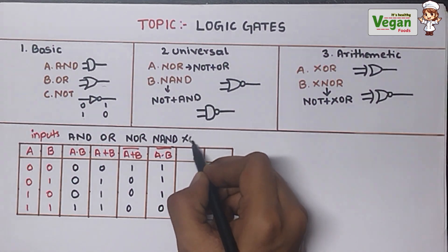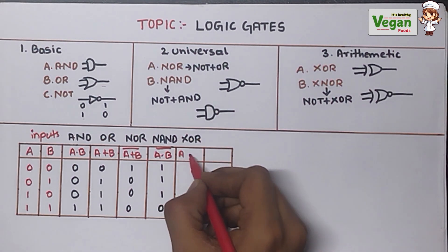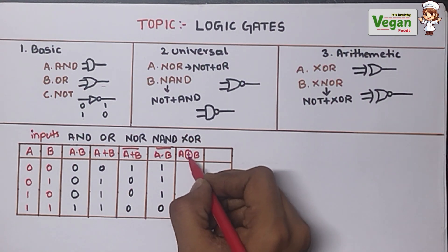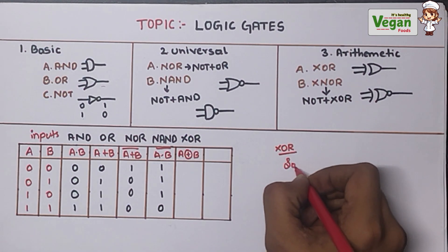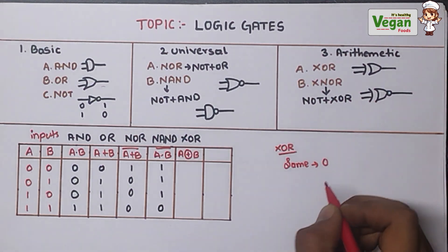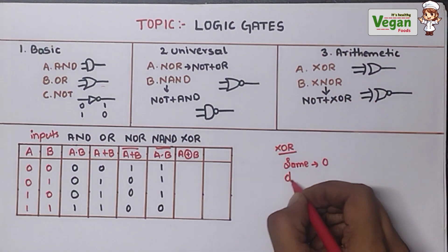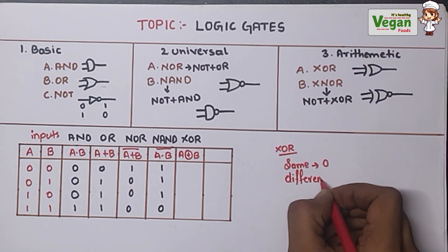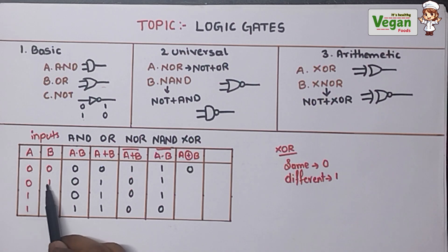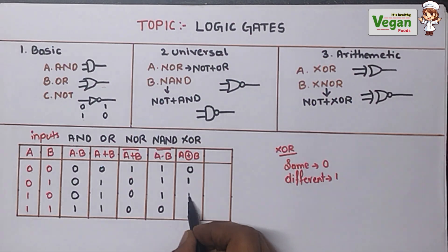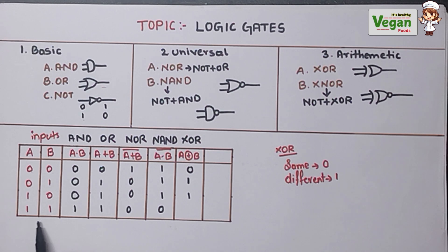Next is the XOR gate. The formula for XOR gate is A XOR B, represented as a plus inside a circle. The short trick for XOR gate is: if both inputs are the same, the output is 0; if both inputs are different, the output is 1. So: 0,0 — same — output 0; 0,1 — different — output 1; 1,0 — different — output 1; 1,1 — same — output 0.